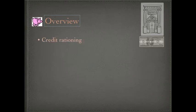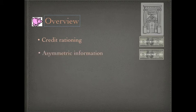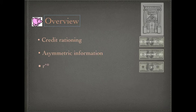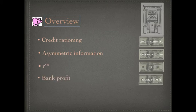Here's an overview of my presentation. First, I'm going to start off by explaining credit rationing, and then go into asymmetric information, followed by the bank optimal rate, and how banks profit.